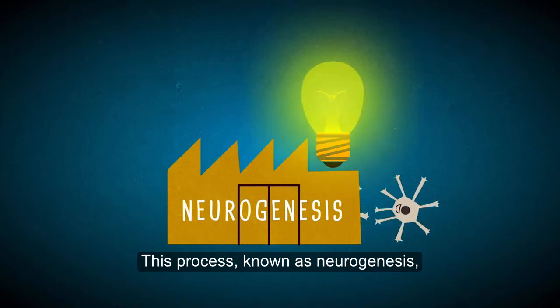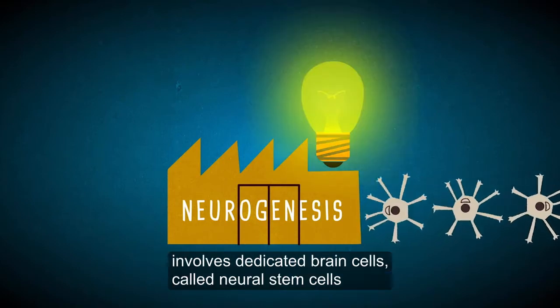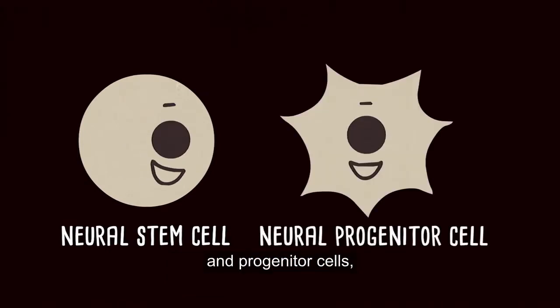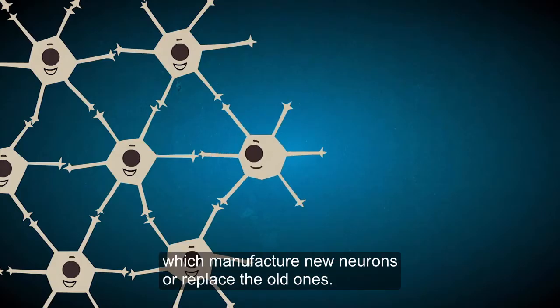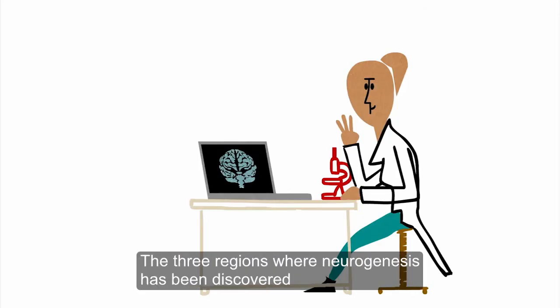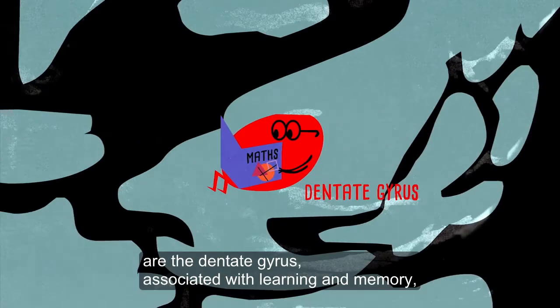This process, known as neurogenesis, involves dedicated brain cells called neural stem cells and progenitor cells, which manufacture new neurons or replace the old ones.